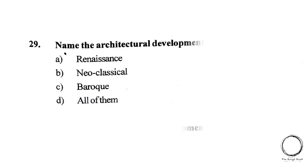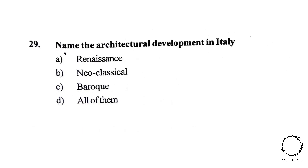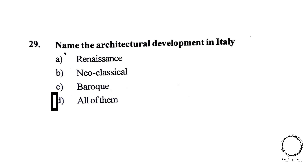Twenty-ninth question: name the architectural development in Italy. A. Renaissance, B. Neoclassical, C. Baroque, D. All of them. The answer is D, All of them.